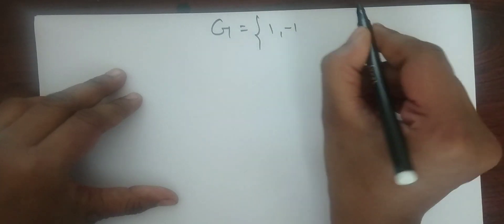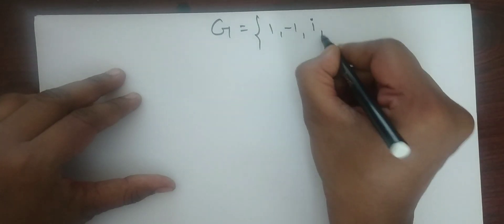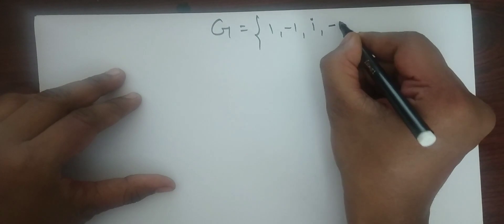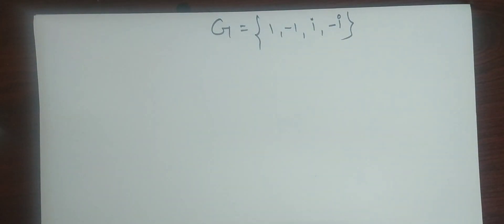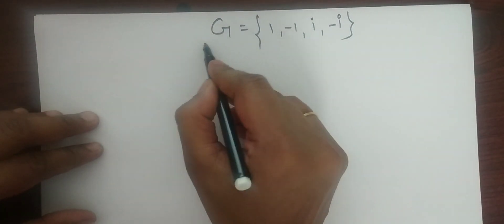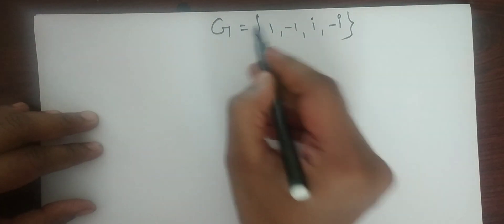Next example on composition table under multiplication. Let G be a group. G is a group means it satisfies the associativity property, identity property, and each and every element has a multiplicative inverse. Then we can say that this is a group. So G is a group.